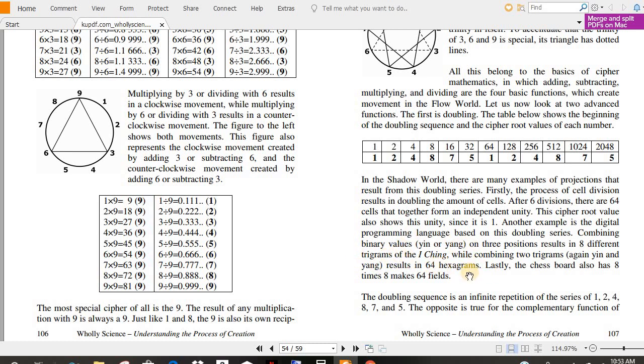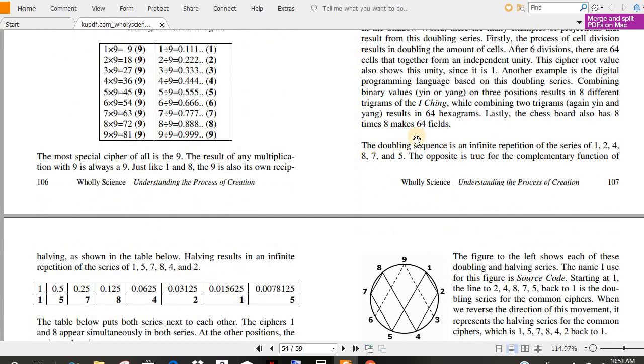That's just fascinating to me. While combining two trigrams, again, yin and yang, results in 64 hexagrams. Lastly, the chess board also has eight times eight makes 64 fields. So you'll find this cipher, these numbers everywhere. The doubling sequence is an infinite repetition of the series of 1, 2, 4, 8, 7, and 5. Remember those numbers. 1, 2, 4, 8, 7, and 5.